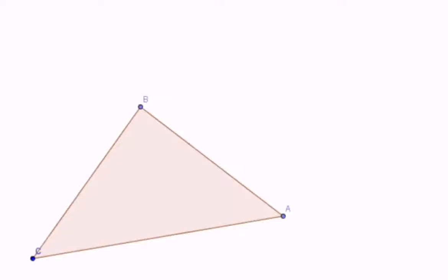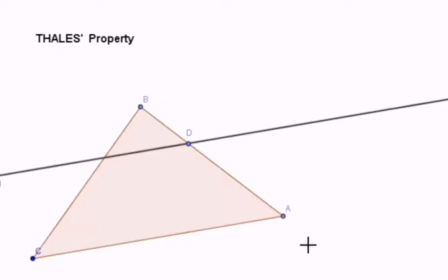In this video we are going to study Thales' property. It is the property that Thales discovered. If we have a triangle ABC and we take a point on AB, any point, not necessarily the midpoint, and if we draw the parallel to AC passing through D.